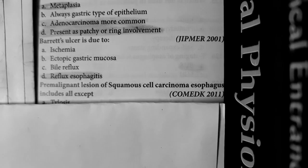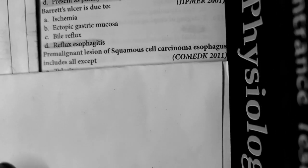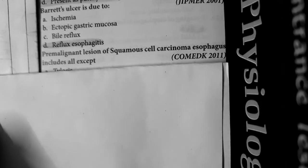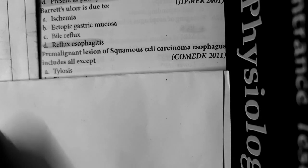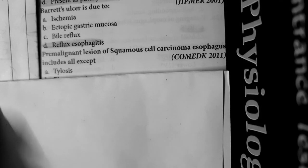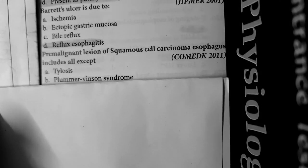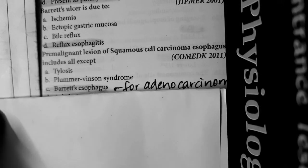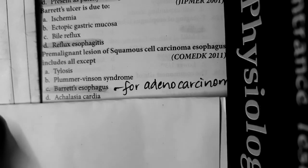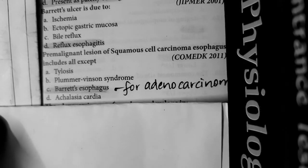Question number 6: Premalignant lesions of squamous carcinoma of esophagus include all except Barrett's esophagus. Tylosis is a risk factor of squamous cell carcinoma — tylosis palmaris et plantaris. Plummer-Vinson syndrome — true. Barrett's esophagus is a risk factor of carcinoma esophagus, but it is for adenocarcinoma and not for squamous cell carcinoma. Achalasia cardia is a premalignant lesion for squamous cell carcinoma.